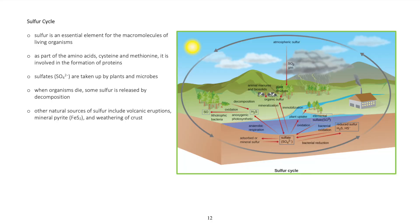Sulfur cycle. Sulfur is an essential element for the macromolecules of living organisms. As part of the amino acids cysteine and methionine, it is involved in the formation of proteins.